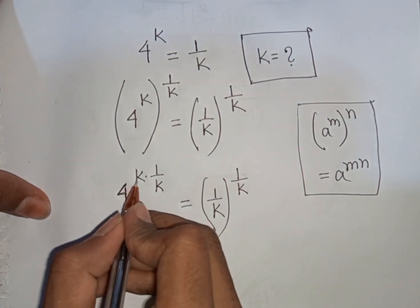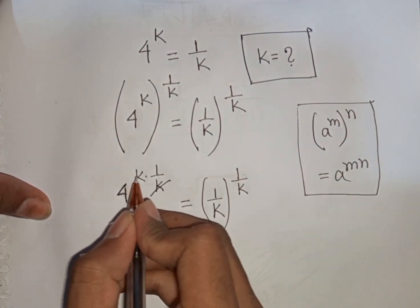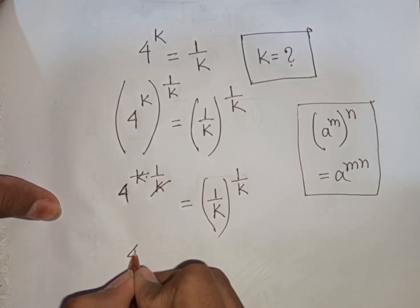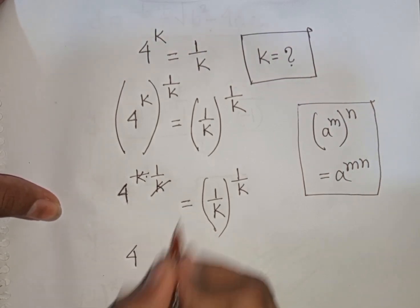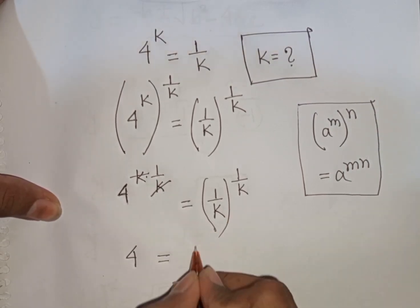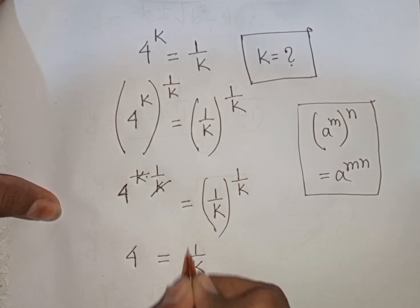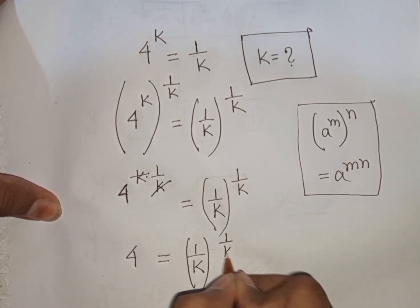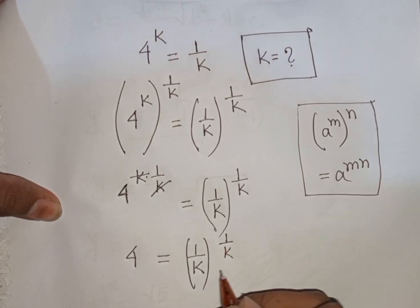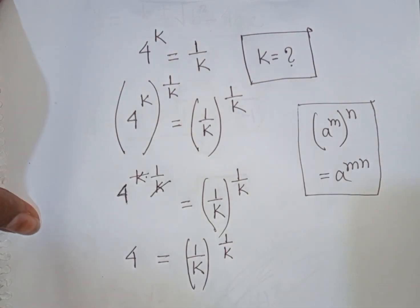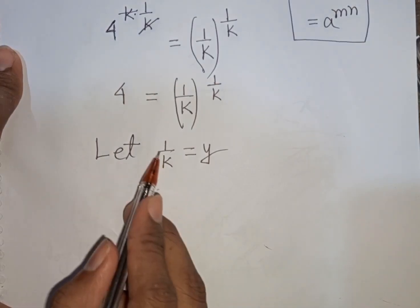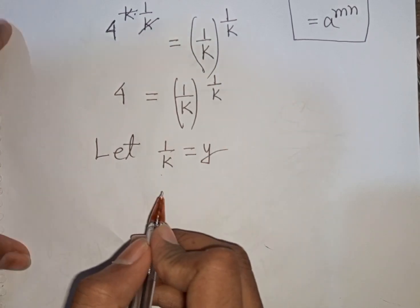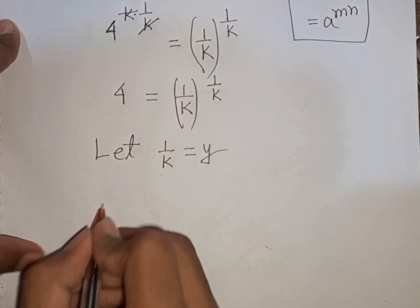Now we see this k and this k will be cancelled, so we have 4 power 1, same as 4, is equal to 1 by k bracket power of 1 by k. Now let 1 by k be substituted by y, so our equation will be y power y.